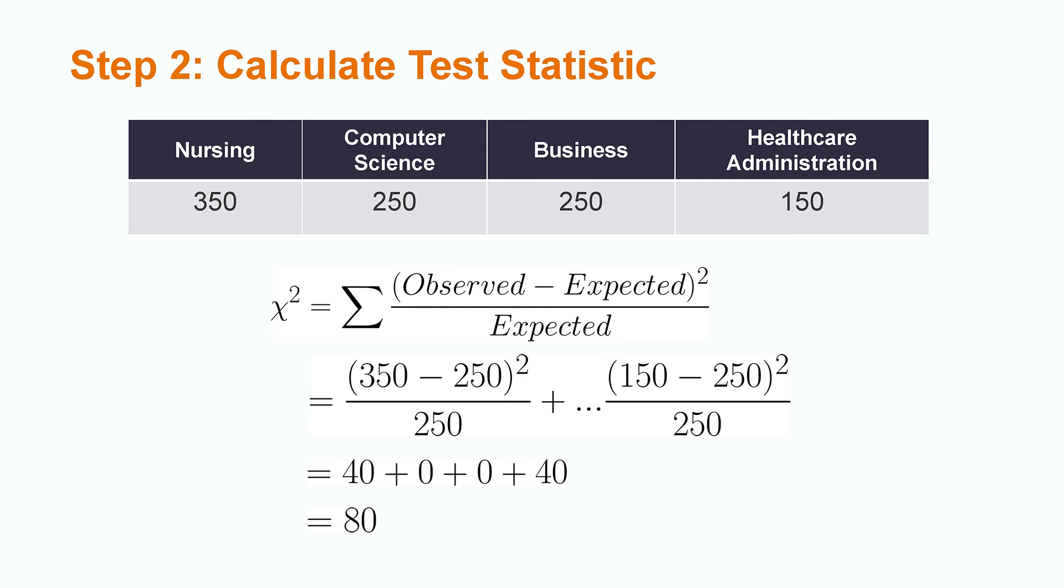If the count of students is 350 for nursing, 250 for computer science, 250 for business, and 150 for healthcare administration, we get a chi-square test statistic of 80.